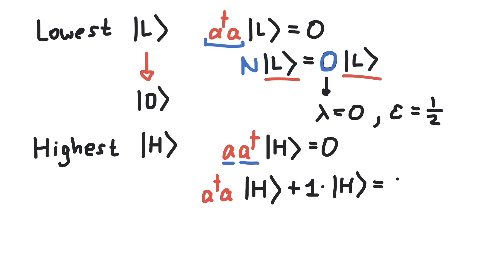Now we can subtract this term to the right-hand side and replace a dagger a with a number operator. So n, acting on our highest state, is minus one times our highest state. And again, the highest state is an eigenvector of the number operator.